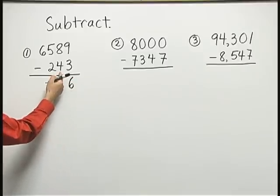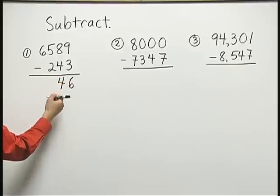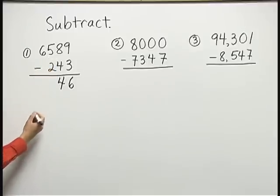Then I move to the tens place, 8 minus 4 is 4. Then the one-hundredths place, 5 minus 2 is 3.